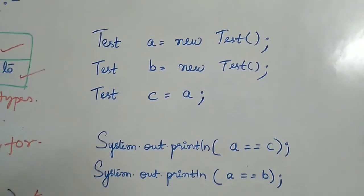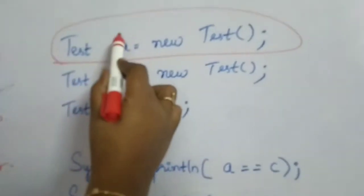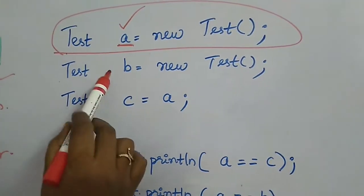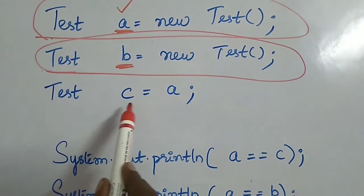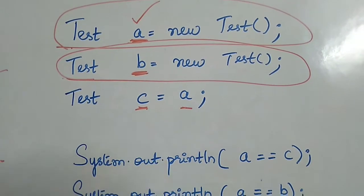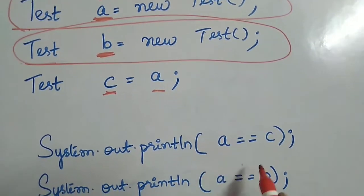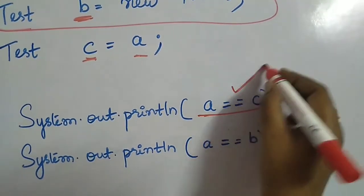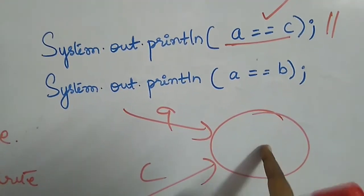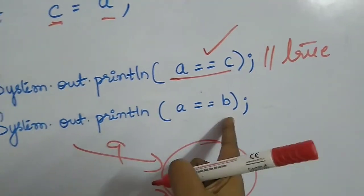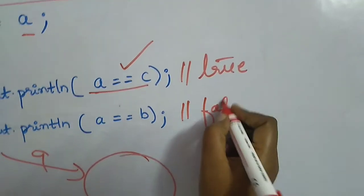Equality operators can also check equality between object references. Say I create an object referred to by variable A, another object pointed to by B, and I make C point to the same object as A. Now A, B, C are object references and I compare them. Checking A == C is totally valid — since A and C both point to the same object, this returns true. But since A and B point to two different objects, A == B returns false. This is a very important interview question.